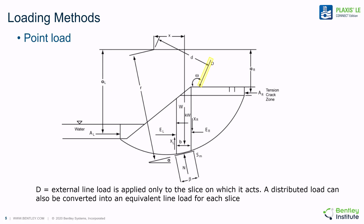Point loads are considered in the analysis as an external force applied to a specific point on the ground surface, as shown in the above figure. In the analysis, the line load is applied only to the slice on which it acts, and is considered in the overall summation of vertical and horizontal forces, as well as the summation of moments. A distributed load is ultimately converted to an equivalent line load for each slice on which it is applied in the model. These same principles hold for a 3D analysis as well.